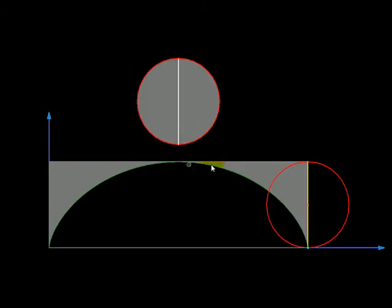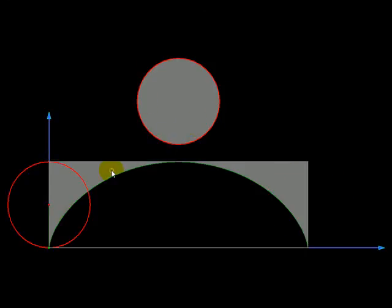The area trapped between a bounding box and a cycloid is equal to the area of the circle that created it. Now all that remains is simple arithmetic. Take the area of the rectangle, subtract the area of the circle to get the area under cycloid.